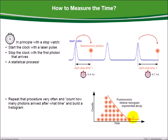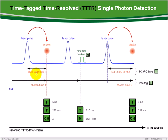By fitting the histogram with an exponentially decaying function, the fluorescence lifetime is determined. We are not only recording the start-stop times between the laser pulse and the photon detection, but also the time between the start of the experiment and the arrival of a photon — the so-called time tag. In addition, external markers, also saved as time tags, allow synchronizing the data acquisition with image scanners.